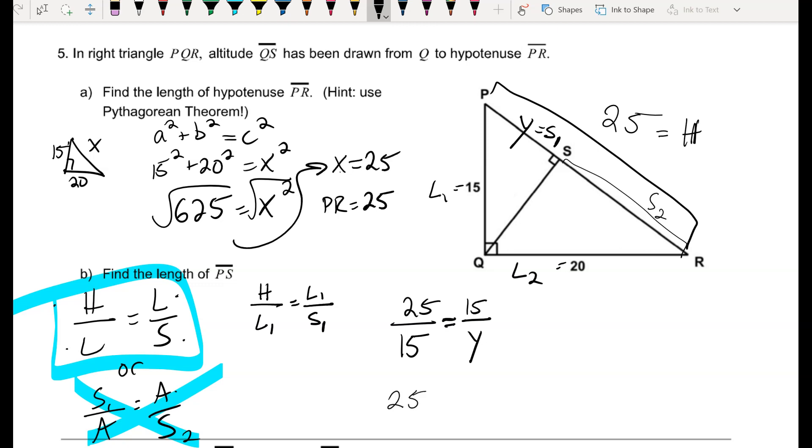If I cross multiply, 25 times y is 25y, and 15 times 15 is 225. I can divide out the 25, and 225 divided by 25 is just 9. So the missing piece for PS is just 9. I knew this was a geometric mean problem because I didn't know any information about the altitude. If I did know information about the altitude, it would probably have to be an altitude squared problem.